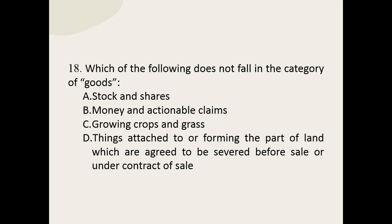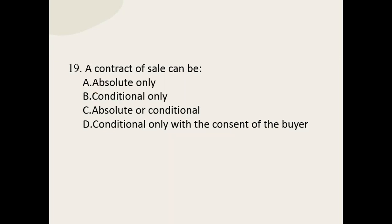Q18: Which of the following does not fall in the category of goods? The options are: stock and shares; money and actionable claims; growing crops and grass; things attached to or forming part of the land which are agreed to be severed before sale or under the contract of sale. The correct option is: money and actionable claims.